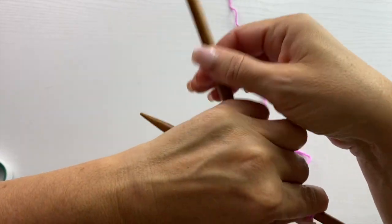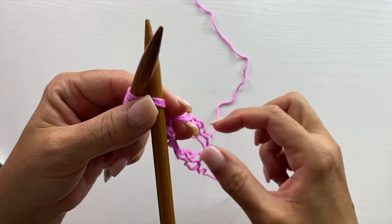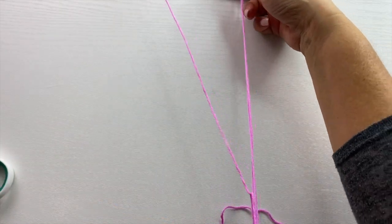Okay, and as that loop gets shorter, we're going to just simply pull the working yarn through that loop to make another elongated chain to keep our yarn three strands.